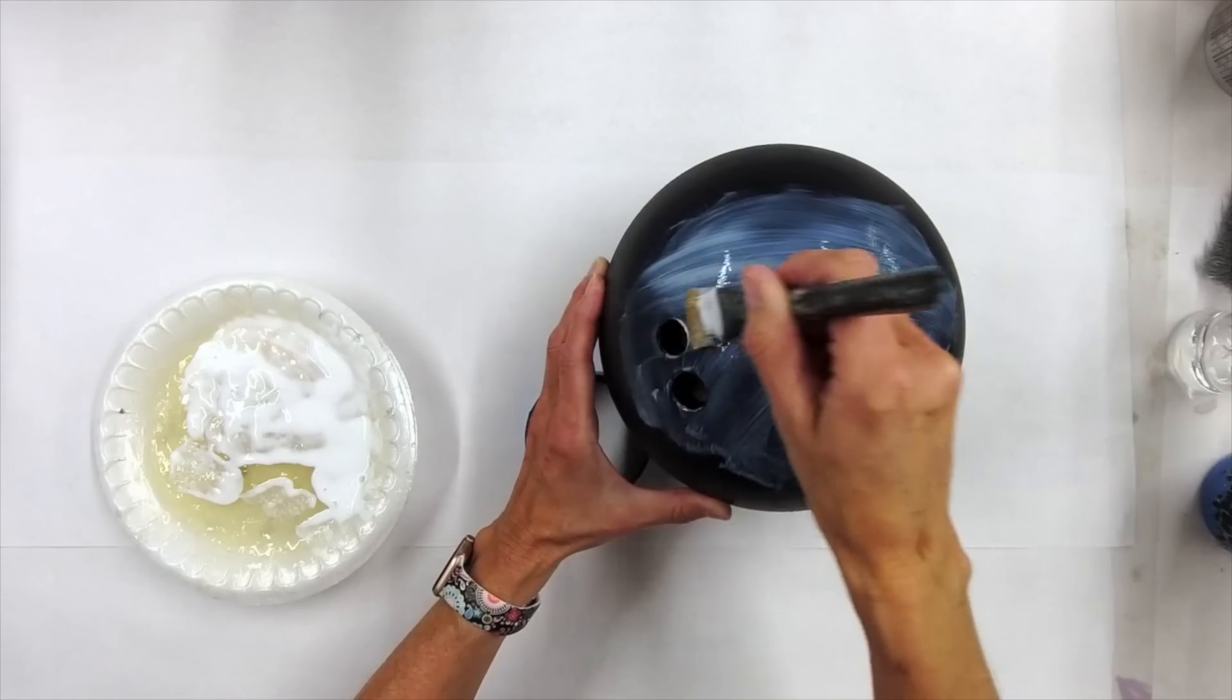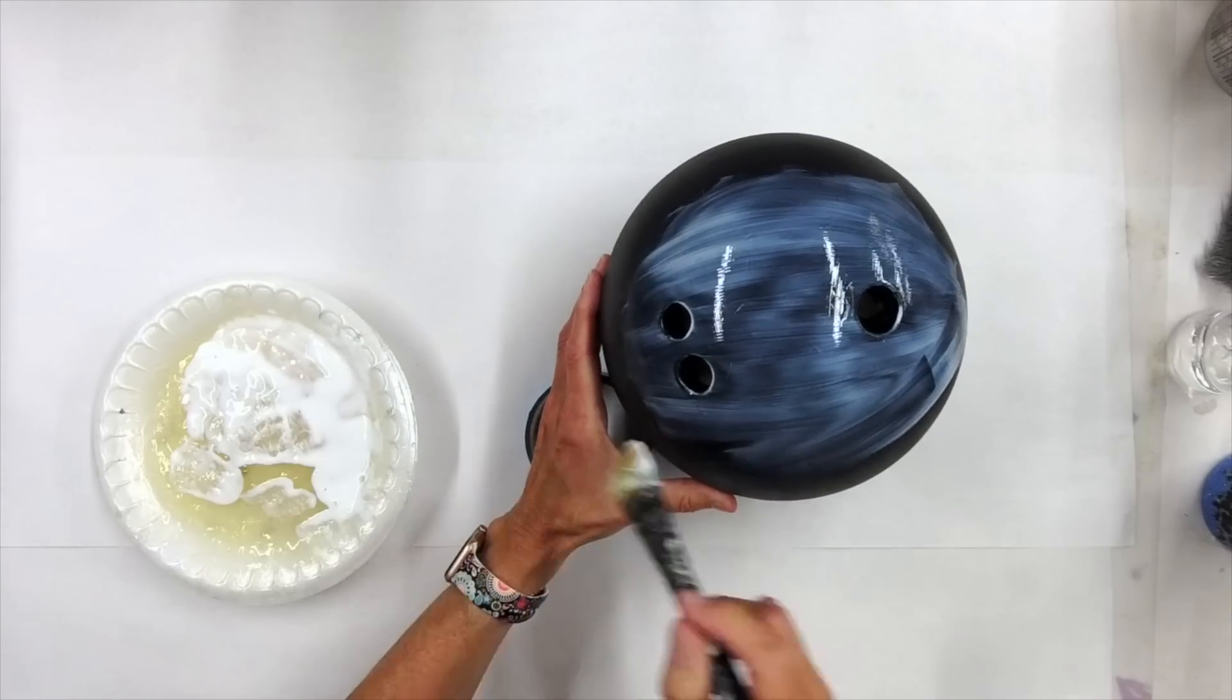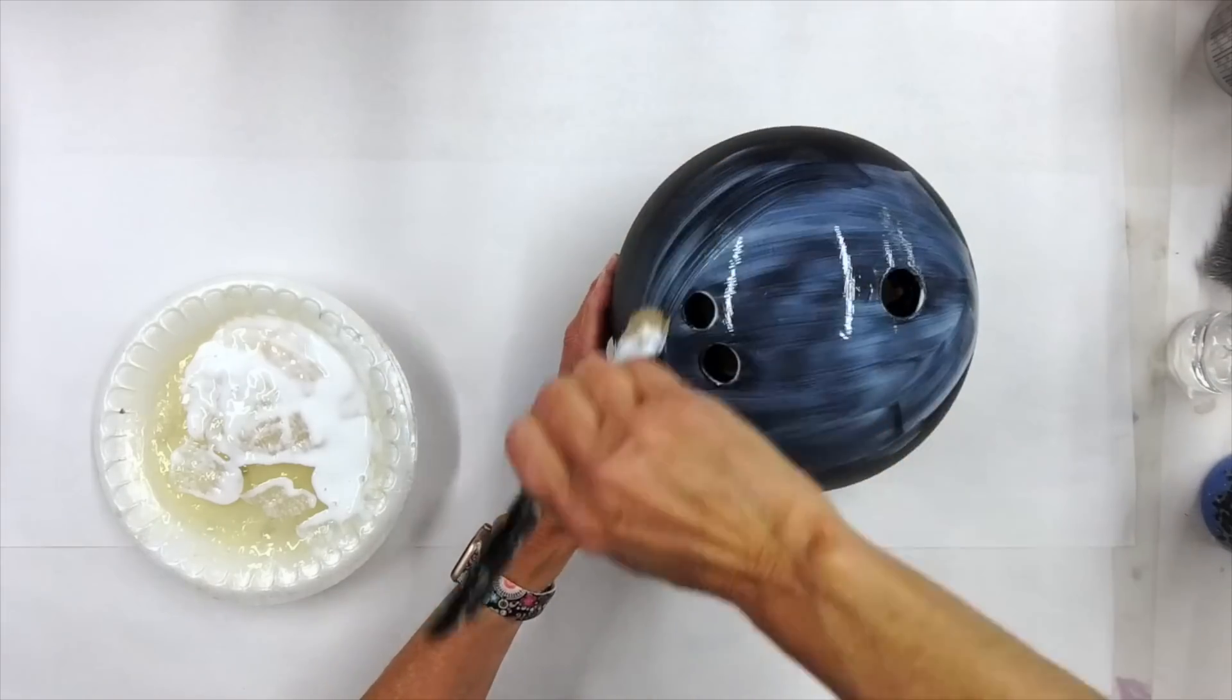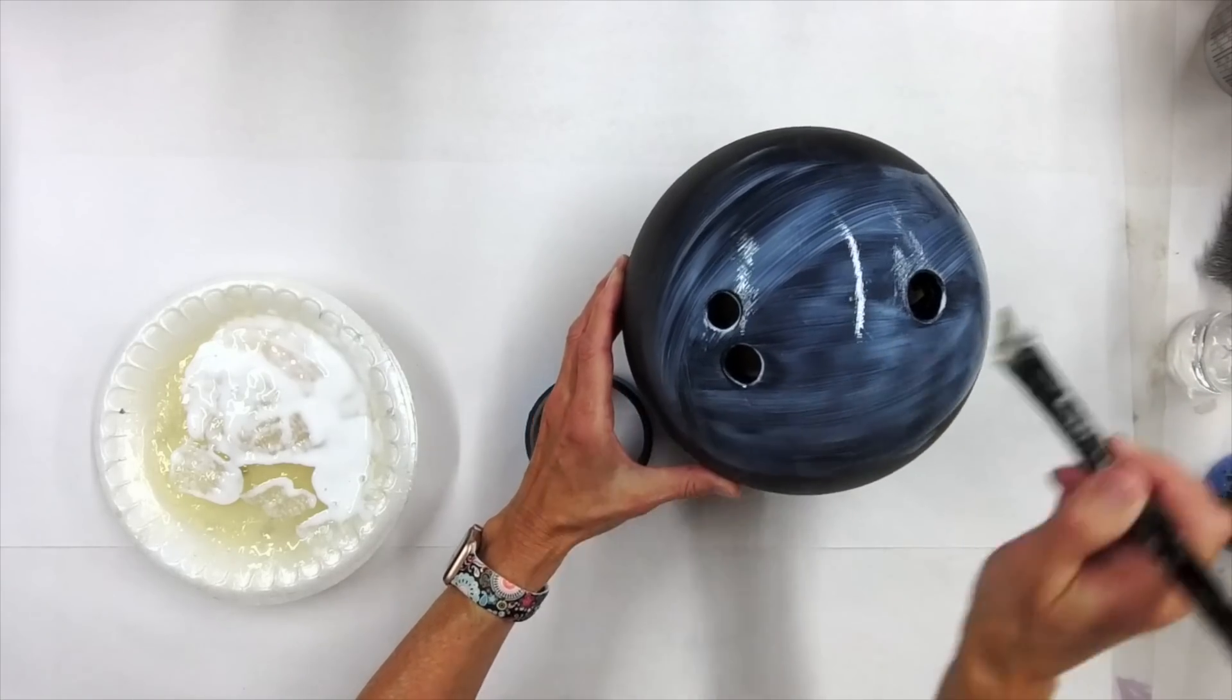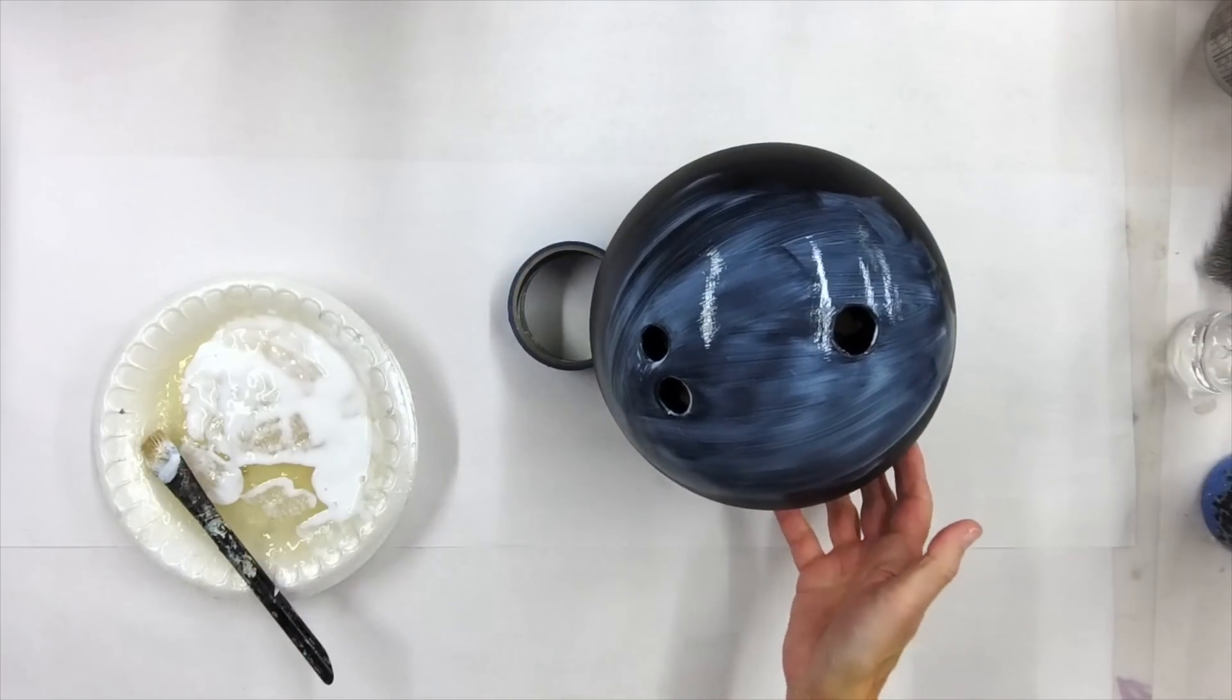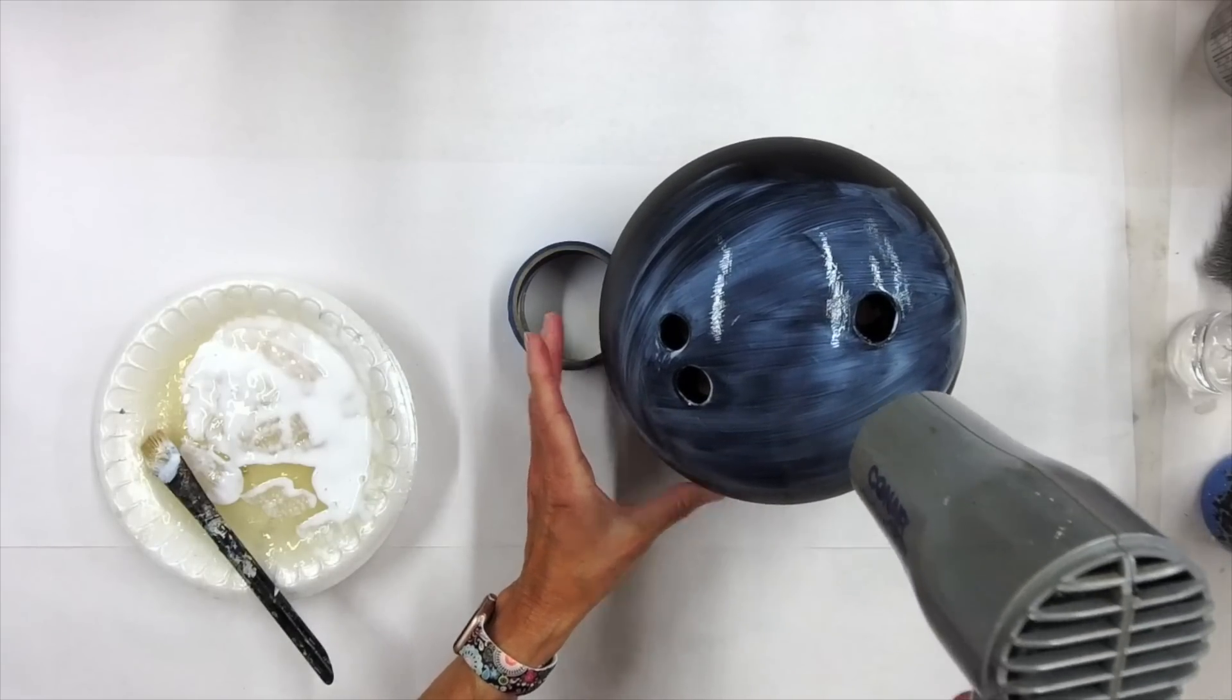Foil adhesive does not self-level, so that means any brush stroke you leave behind could possibly be seen in the transfer. So as I said, we're working on something that's pretty smooth. I'm going to try and smooth out my application marks the best I can. So I'm going to get the bottom of this done like I did with the black.